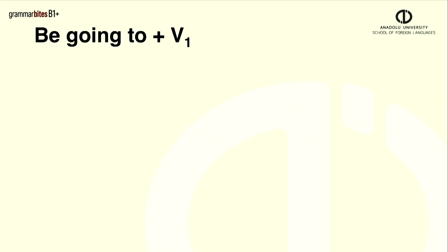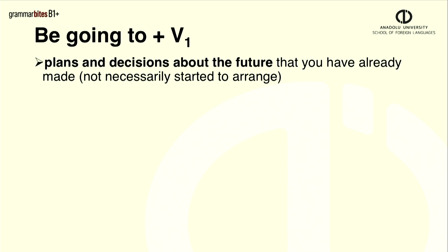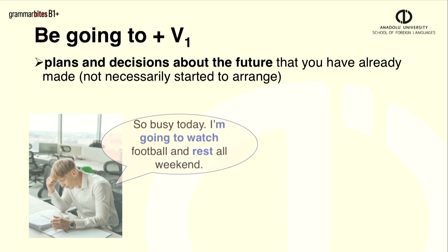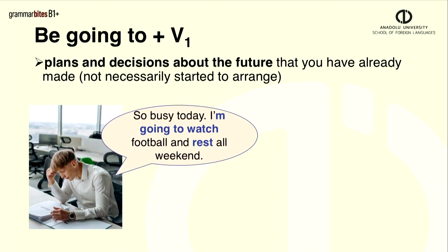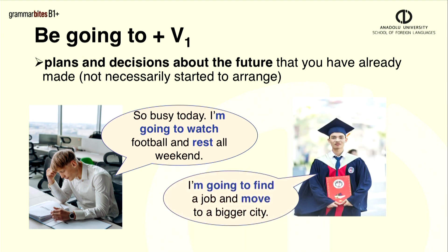We use be going to with verb one to talk about future plans and intentions. We don't need to take action like setting a date or time yet. For example, so busy today, I'm going to watch football and rest all weekend. So this is his plan. I'm going to find a job and move to a bigger city. This is also his plan.